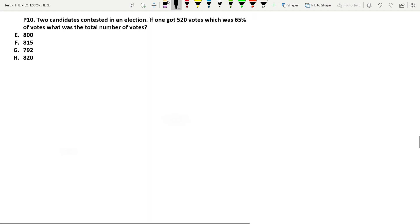Let's move on to the next one. Question number P10: Two candidates contested in an election. If one got 520 votes which was 65 percentage of votes, what was the total number of votes? So let the total number of votes be x. So 65 percentage of x, which means 65 by 100 into x, is equal to 520. So x is equal to 520 divided by 65 into 100. You can divide by 13: 5, 4, 0, 5, 1 and 8. So total becomes 800. Option E, 800 is the answer.